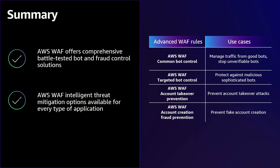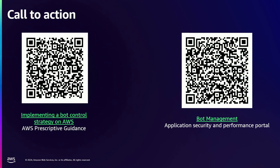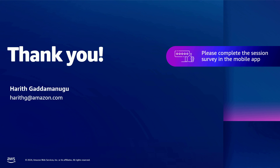That brings me to the end of my talk. The key takeaways: AWS WAF offers comprehensive, battle-tested bot solutions and fraud offerings. There are different options for token acquisition as we've seen today, and for different types of applications and use cases, we have an option available. I'll also give you some additional resources — the first is a link to our prescriptive guidance on how to implement a bot control strategy, and the second is a link to our application security performance portal. Thank you.